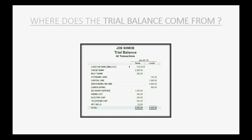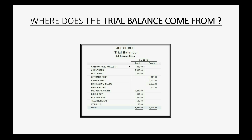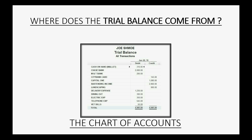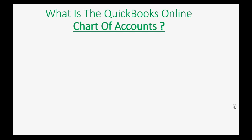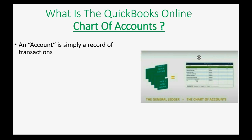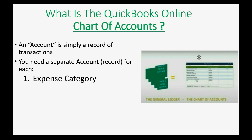You might be wondering where does the Trial Balance come from. Well, the Trial Balance comes from something in the software called the Chart of Accounts. An account is simply a record of a certain category of transactions. In the days before the computer, the Chart of Accounts was called the General Ledger — it was simply a notebook where each page in the book was a separate account, a separate category of transactions. You need a separate account for each expense category you have, like delivery expense or repair expense, and a separate account for each income source.